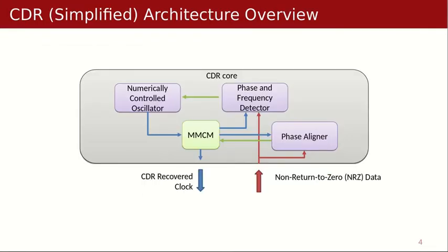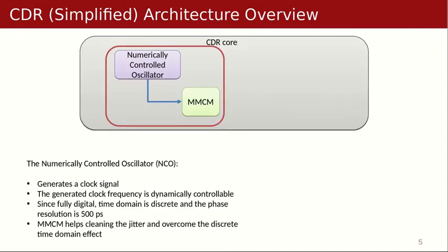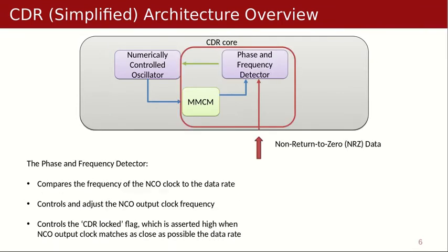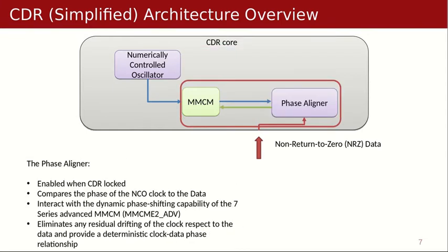A simplified architecture of the core consists of a numerically controlled oscillator, which generates a clock signal with a controllable frequency. The clock frequency is compared with the data rate by the phase and frequency detector, and then the phase aligner grants a deterministic phase relationship.